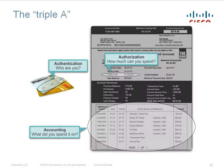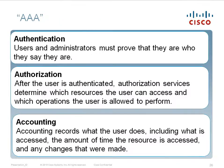There is a security method called AAA, meaning authentication, authorization, and accounting. Authentication: users and administrators must prove that they are who they say they are. Authorization: after the user is authenticated, authorization services determine which resources the user can access and which operations the user is allowed to perform. Accounting: accounting records what the user does, including what was accessed, the amount of time resources were accessed, and any changes that were made.